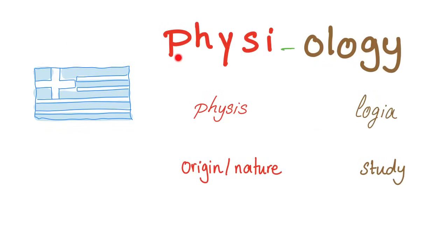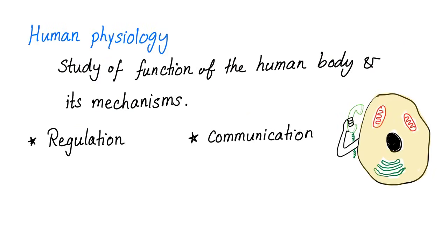Let's break this word down. Physiology comes from the Greek words physis and logia. Physis means origin or nature. Logia means the study of. But we are not talking about every kind of physiology — we are talking about human physiology, because this is Medicosis Perfectionelis.